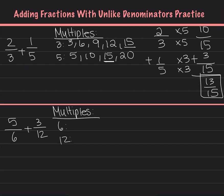Looking at the next one, we have 5 over 6 plus 3 over 12. We're going to find the multiples of our denominators and find the least common one. For 6, the multiples are 6, 12, 18, 24. For 12, the multiples are 12, 24, 36, 48.